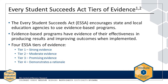ESSA encourages state and local education agencies to use evidence-based programs. Evidence-based programs have evidence of their effectiveness in producing results and improving outcomes when implemented. There are four ESSA tiers of evidence: strong, moderate, promising, and demonstrates a rationale. You will learn about these tiers in more detail later in this chapter. You may have experience with the ESSA tiers of evidence from using or selecting evidence-based programs. This toolkit focuses on generating new evidence. As a program is being implemented and evaluated, it is important to consider how the desired or required tier of evidence connects to the evaluation design.